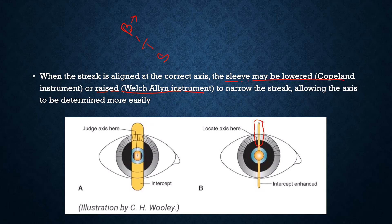To summarize using BITS: there will be no break when the streak is aligned with the reflex; the intensity will be brightest when properly aligned; the beam will be thinnest when nicely aligned; and there will be no skew movement when you are properly aligned with the reflex.